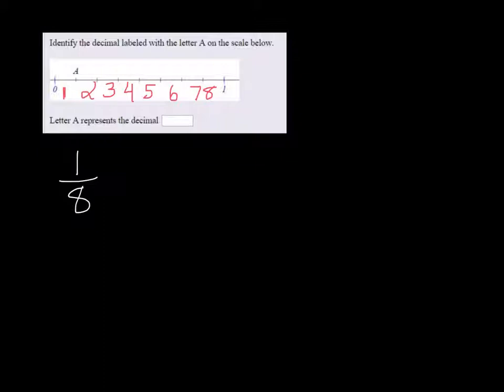Now the A represented here is right in the first spot. So that one, since it's in the first spot, is one over eight. Well, one over eight, we need to write this as a decimal.